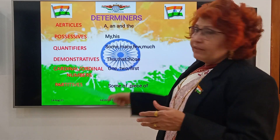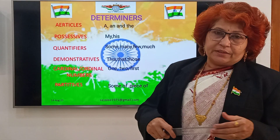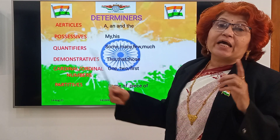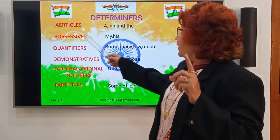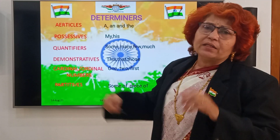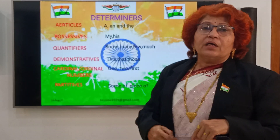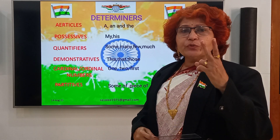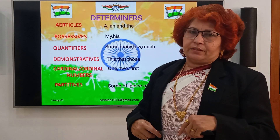These are the determiners — there are 6 types of determiners. The first type is articles, and these articles are further divided into 2 parts.